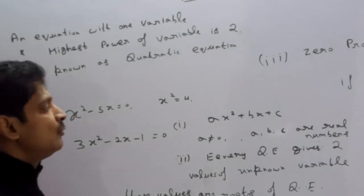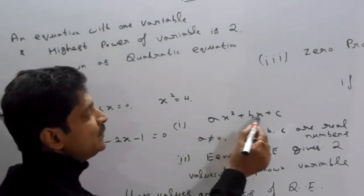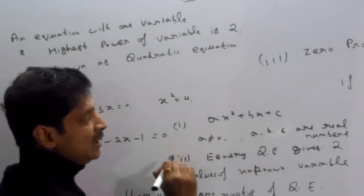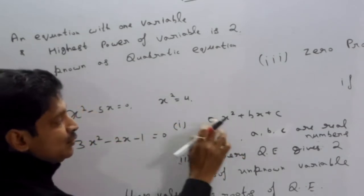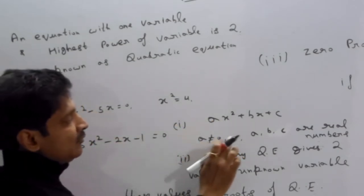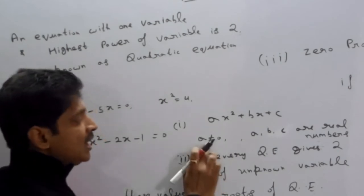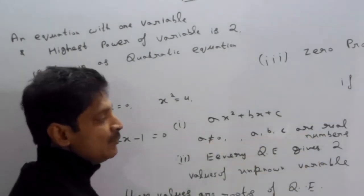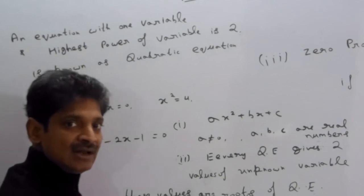Now, general formula. Aap general formula kya hai? The general form is ax squared plus bx plus c, where x is the variable and highest power of x is 2. A is not equal to 0 — a yaha pe zero nahi hoga — and a, b, c are real numbers.